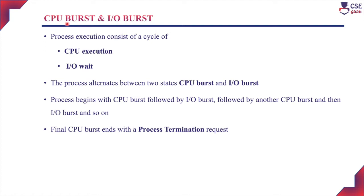Two important concepts in process scheduling are CPU burst and I/O burst. CPU burst is the total time a process takes to complete its execution with the CPU. I/O burst is the total time a process requires to be serviced by I/O devices. During process execution, the process cycles between executing with the CPU and then going to an I/O wait state whenever I/O service is required.